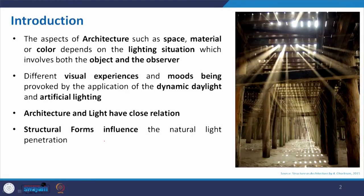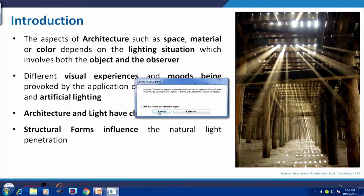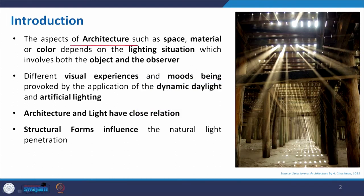At the beginning, if we try to recap what architecture is, many definitions come into picture — it is articulation of space, represented by texture, different components of design, color, shape, and space. The aspects of architecture such as space, material, and color depend on the lighting situation, and that is obviously true.